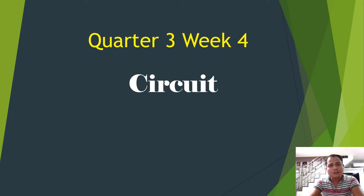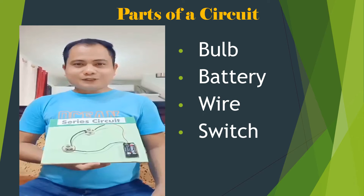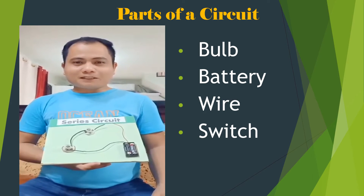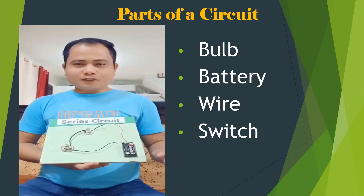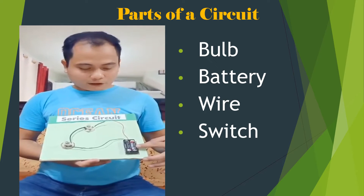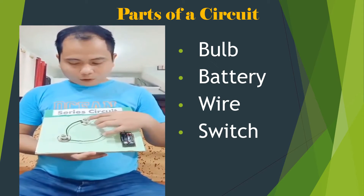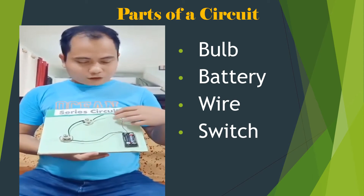Welcome to Quarter 3, Week 4: About circuits. The word 'circuit' comes from the Latin word 'circuitus,' which means 'go around.' A circuit is a complete path of electricity. The different parts of a circuit are: the battery or source, the wire or conductor, the load or bulbs, and a switch.